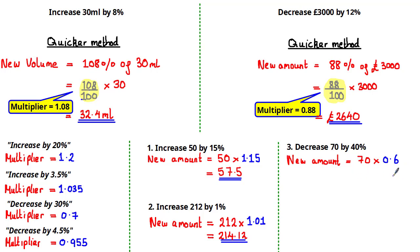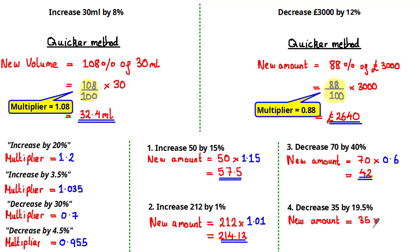Using the calculator, 70 times 0.6 equals 42. Lastly, decrease 35 by 19.5%. Because we are decreasing, we take 100% minus 19.5%, which is 80.5%. The new amount equals 35 times the multiplier 0.805, the decimal equivalent of 80.5%. Using the calculator, the new amount is 28.175.